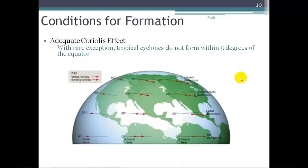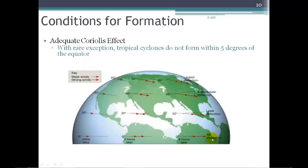Another condition for hurricane formation is adequate Coriolis effect — the apparent rightward deflection of objects in motion in the northern hemisphere. The Coriolis effect is weakest at the equator and strongest as we move toward the poles. This diagram shows winds deflecting most near the pole and least near the equator. We have to have enough Coriolis effect to give the cyclone the spin it needs to develop, which is why we don't see hurricanes within about 5 degrees north and south of the equator.